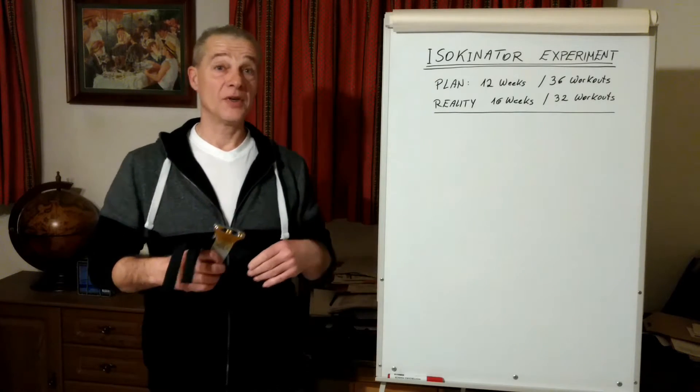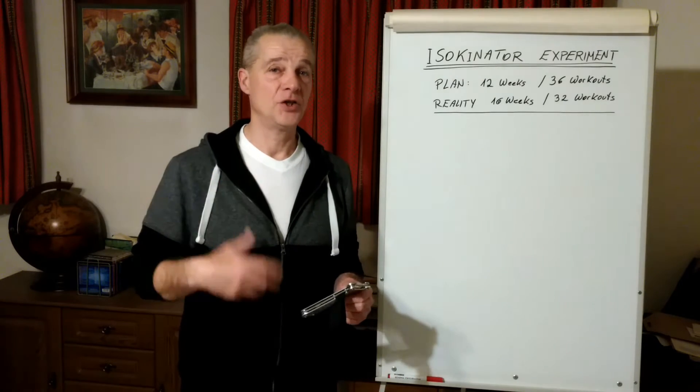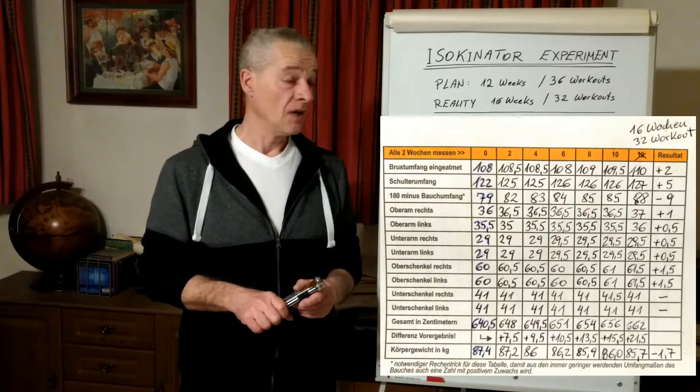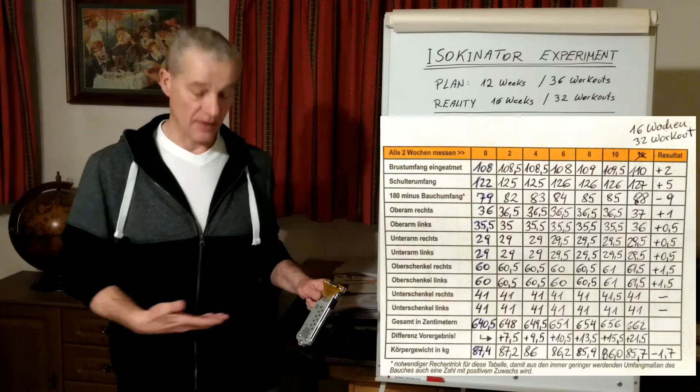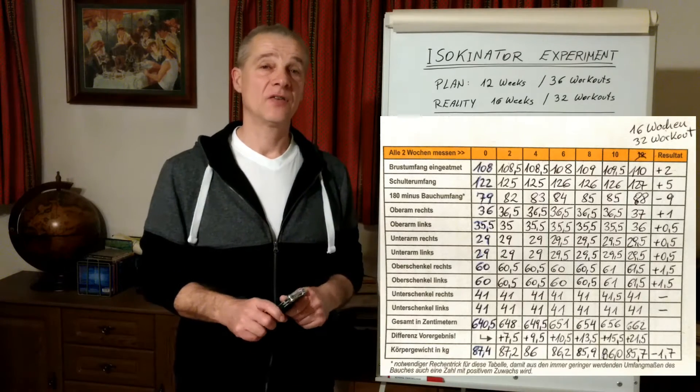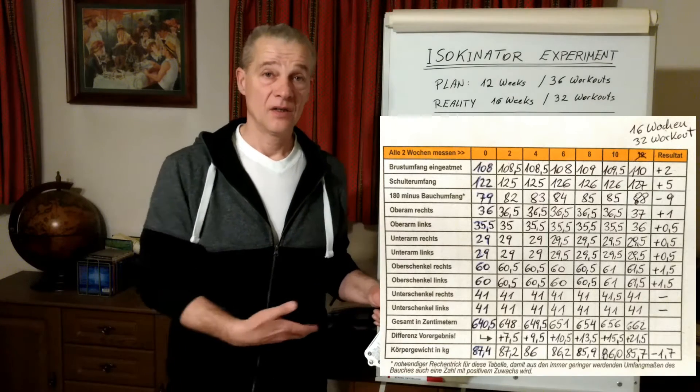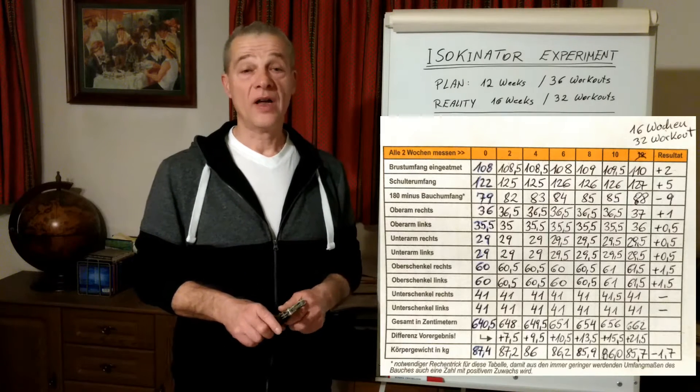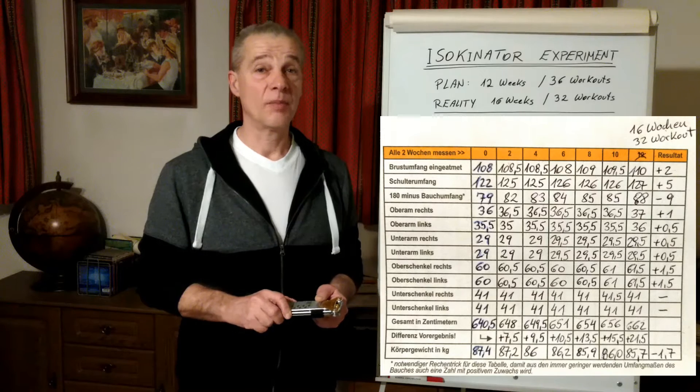Now I will tell you the results of my training. My body changed by 21.5 centimeters total. The most change I can realize is on my abs, on my abdomen, because I lost a lot of fat. The difference was nine centimeters on the stomach area.